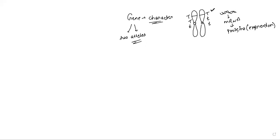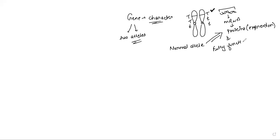The functional unit responsible for expression is proteins. The color of the flower or the height of the plant is because of the proteins. If capital T is present — that is the dominant allele — this is the normal allele, normal factor. Normal allele means a normal protein is going to be formed — a fully functional protein — and fully functional protein means full expression. That's why we say dominant allele makes a normal allele which is fully expressed.